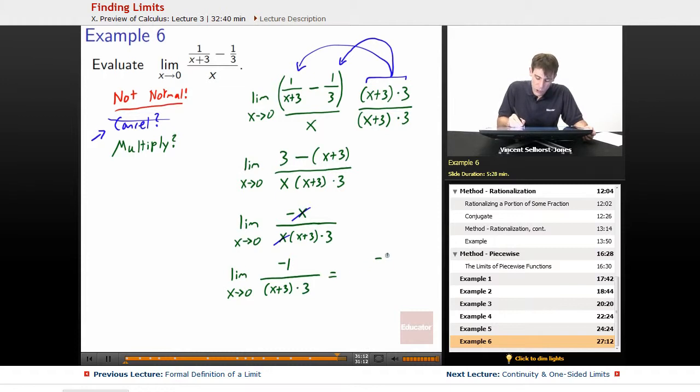So we have, this is equal to negative 1 over 0 plus 3 times 3. Once it's not weird, we can plug in, because now it is effectively normal. And when it's effectively a normal function, you can just plug into it with your limit. Negative 1 over 3 times 3, so that gets us negative 1 over 9. And there's our answer.